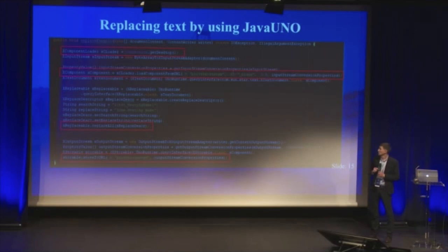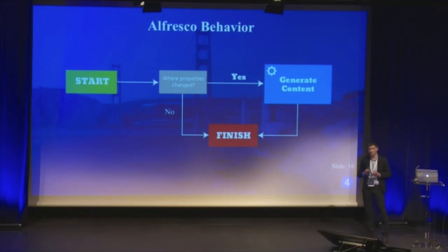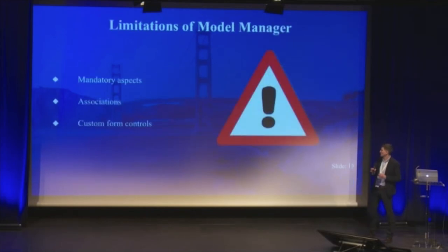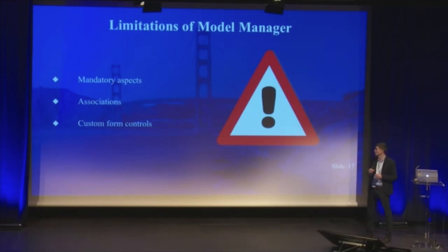The main points are: you need to get an XComponentLoader from the OpenOffice connection, send the content of the template to OpenOffice, replace the text, and save the result to a node. To execute our service and generate documents by template automatically, we wrote an Alfresco behavior that is executed on update of properties of our type and all subtypes. We developed our type to mark types that are required for automatic content generation. We first wanted to use aspects for these needs, but Alfresco Model Manager does not support specifying mandatory aspects, so it didn't work for our business requirements.